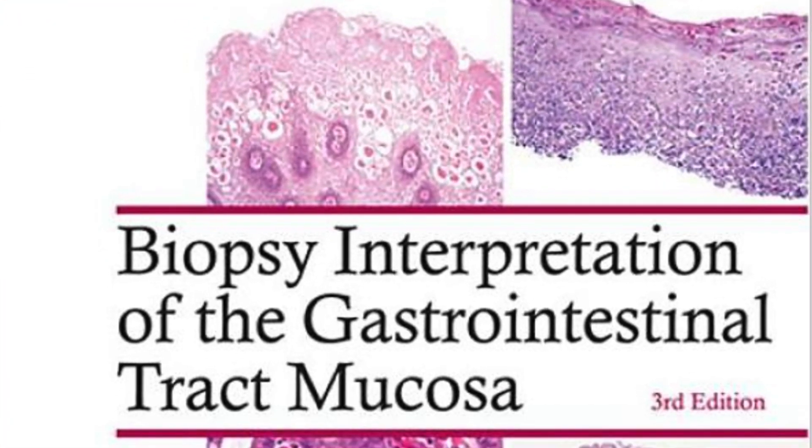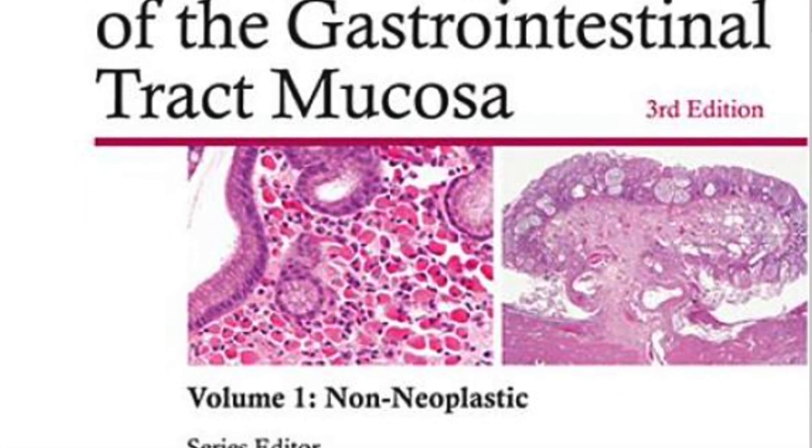Now I'm going to talk about subspecialty resources and textbooks. Since I'm a GI pathologist, I'll start with GI books. My recommendation for pathology residents in training — especially if you're AP1 or AP2, or have no interest in going into GI pathology — is the Biopsy Interpretation series. These are relatively small, not very thick books, and they cover every organ system you could think of. For GI, there are two volumes: one on neoplastic GI and one on non-neoplastic GI, plus a separate volume on liver.